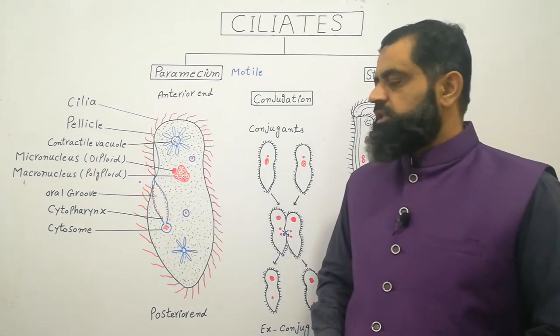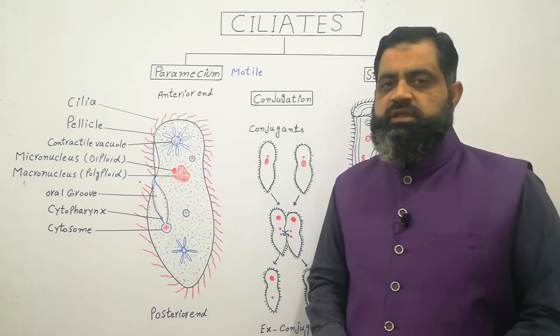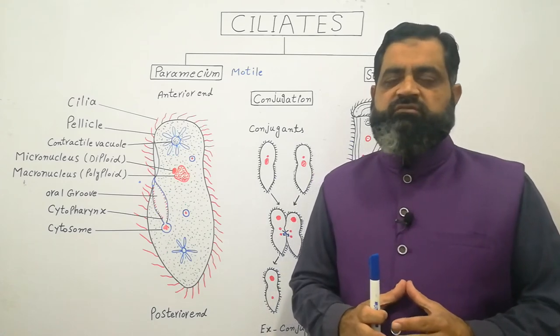Cilia help them to locomote in the water. They can move forward, they can move backward and they can turn right or left, and they contract in a very precise manner.